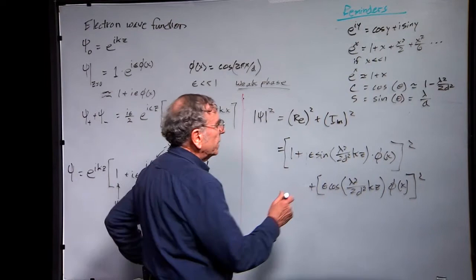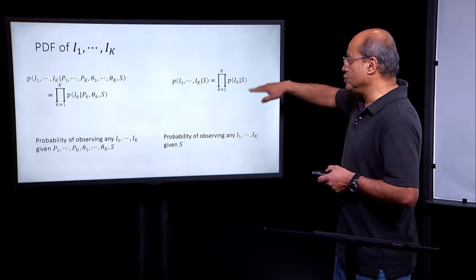We made the weak phase approximation saying that epsilon is very small. And what that means is that we can ignore this part, and the same for this.